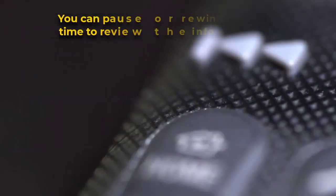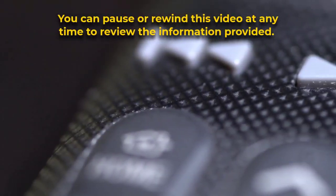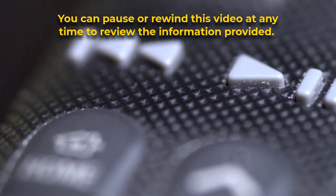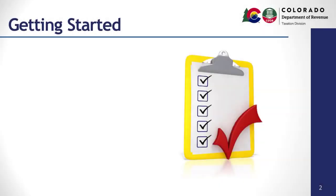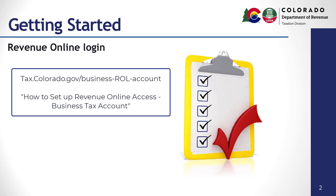You can pause or rewind this video at any time to review the information provided. Before we get started, make sure you have everything that you will need to file your return successfully. You will need a Revenue Online login with access to your tobacco account. If you do not have a Revenue Online login, pause this video and watch the video titled How to Set Up Revenue Online Access, Business Tax Account.